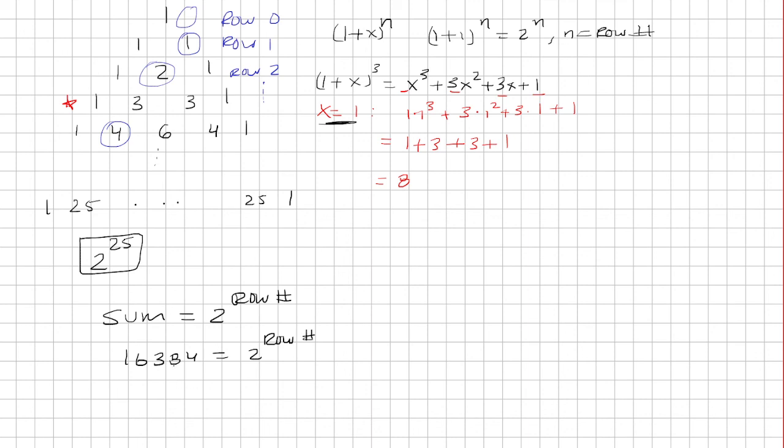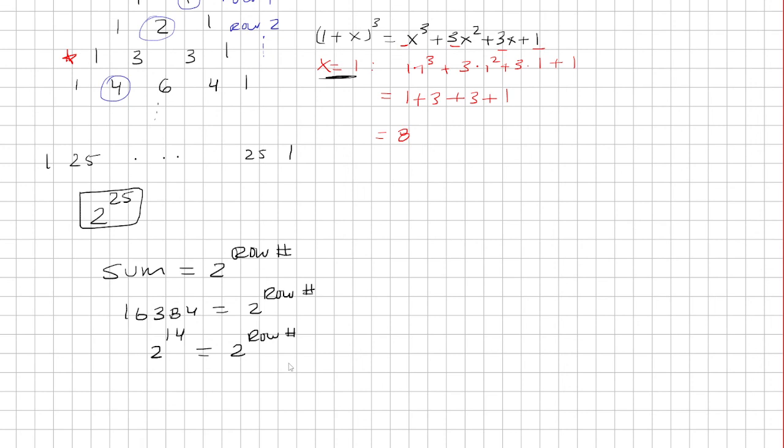And I can rewrite 16,384 as 2 raised to the 14th power. And because these two are equal and have the same base, I just look at the exponents and see that 14 is equal to the row number.